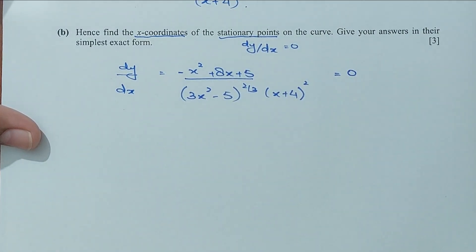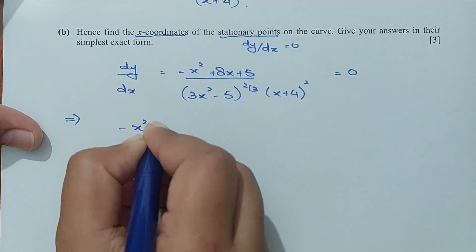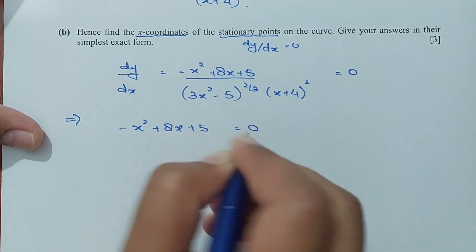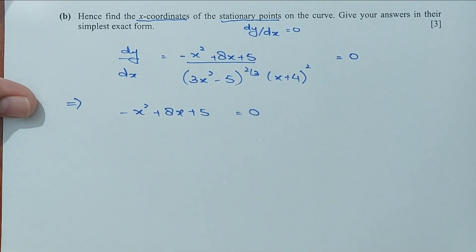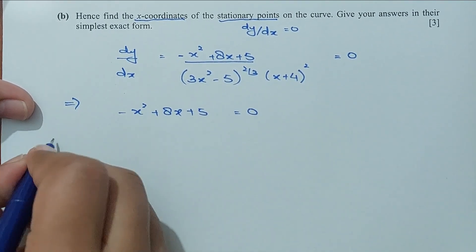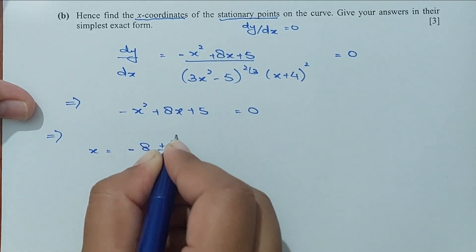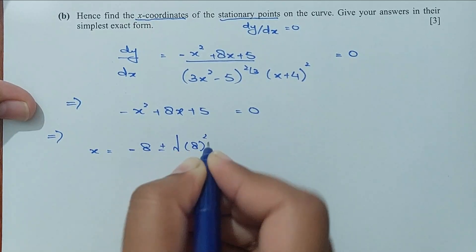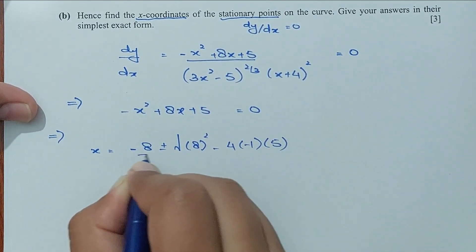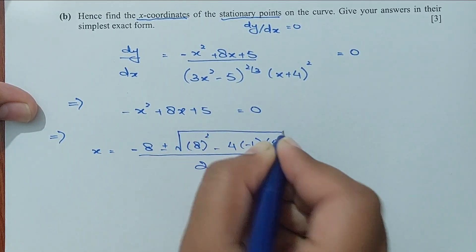By cross multiplication, the denominator multiplied by 0 is just 0. So −x² + 8x + 5 = 0. We are finding the x-coordinates of the stationary points. That is a quadratic equation. Applying the quadratic formula: x = [−b ± √(b² − 4ac)] / (2a), dividing by 2 times a.